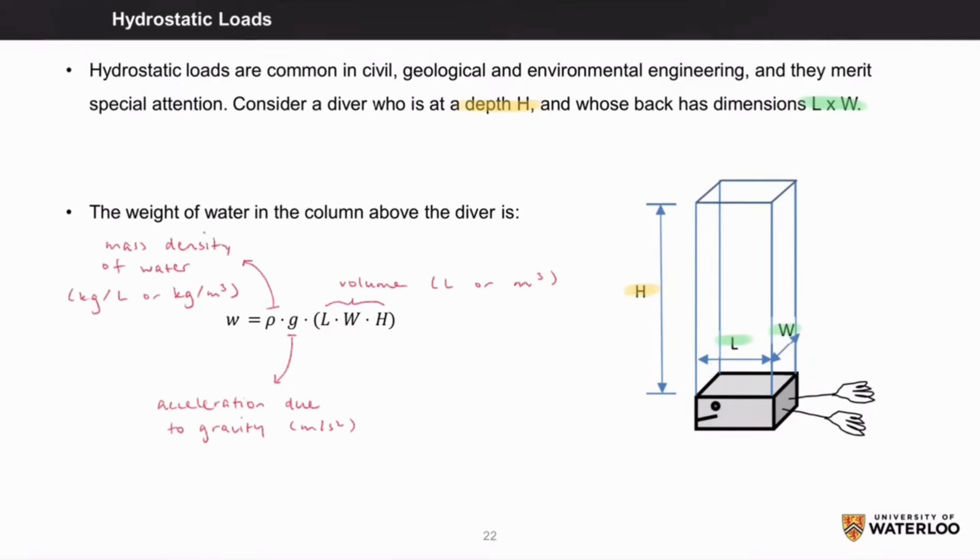For clarification, the smaller w refers to the weight of the water, while the uppercase w refers to the width of the volume.